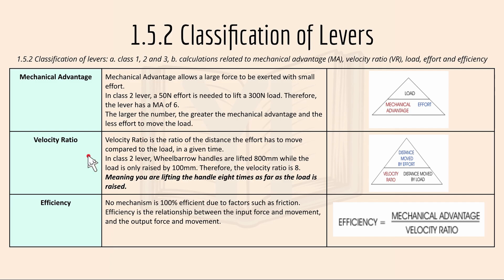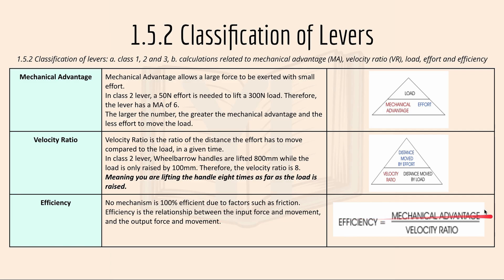Velocity ratio is the ratio of the distance the effort has to move compared to the load in a given time. In a class 2 lever example, a wheelbarrow's handles are lifted 800mm but the load is only raised 100mm, giving a velocity ratio of 8 — meaning you are lifting the handle 8 times as far as the load is raised. Efficiency: no mechanism is 100% efficient due to factors such as friction, and efficiency is the relationship between the input force and movement and the output force and movement.